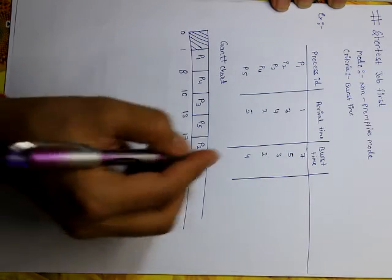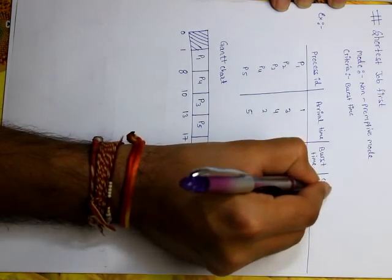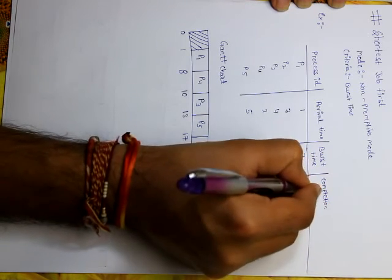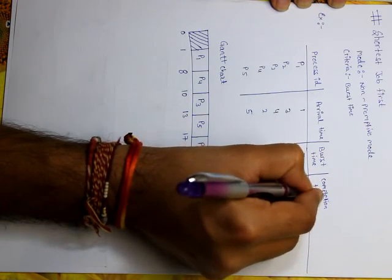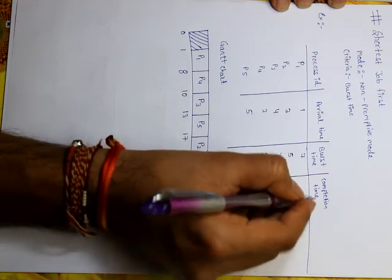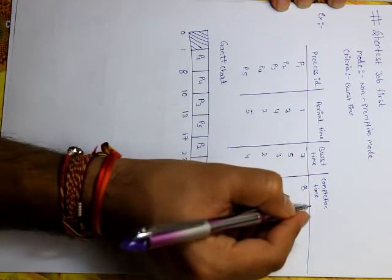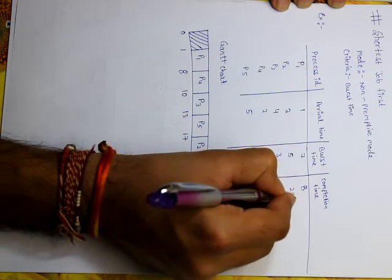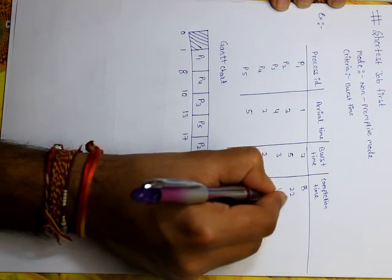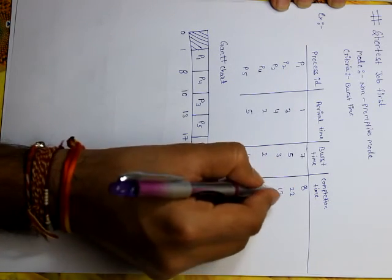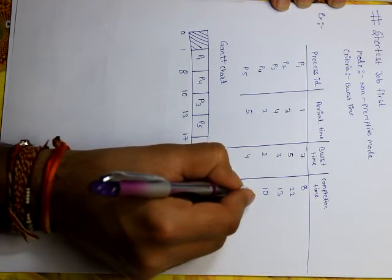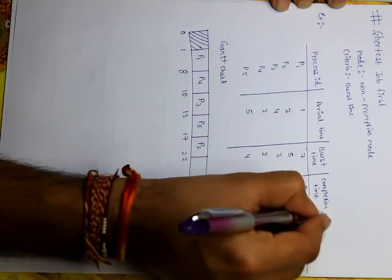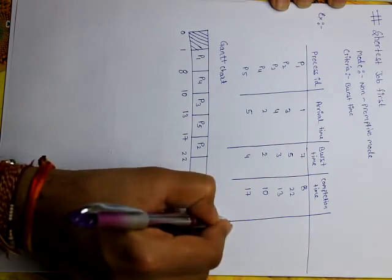Now we have the completion times. Completion time of P1 is 8, P2 is 22, P3 is 13, P4 is 10, and P5 is 17.